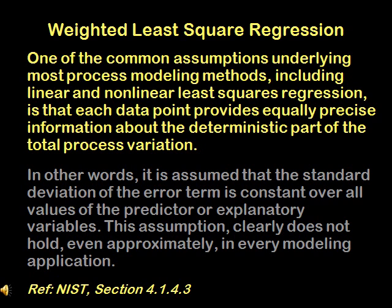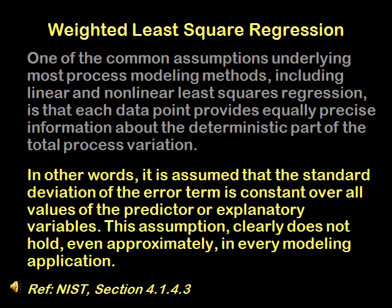According to NIST, one of the common assumptions in the construction of models is that each data point provides equally precise information in determining the final results. This assumption is made for both linear and nonlinear least squares regressions. In other words, it is assumed that the error is constant over all data points. This assumption is not correct in every modeling application.